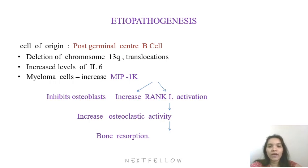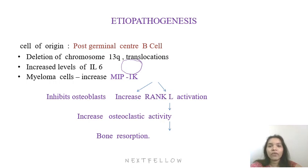Coming to the etiopathogenesis, predominantly in multiple myeloma, the cell of origin is a post-germinal center B cell. There is deletion of chromosome 13q, predominantly seen in multiple myeloma, along with translocations involving chromosome 13. There is an increased level of interleukin-6, which is a very important marker for the survival and increased burden of myeloma plasma cells.